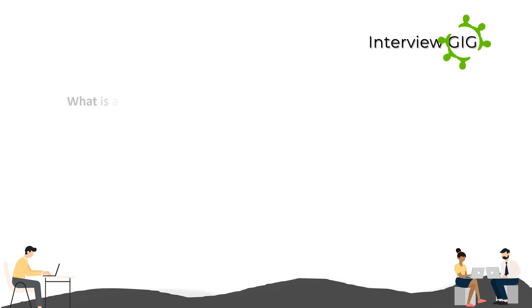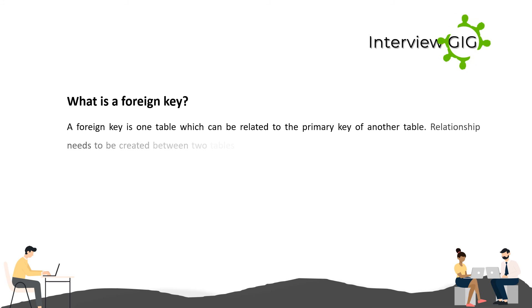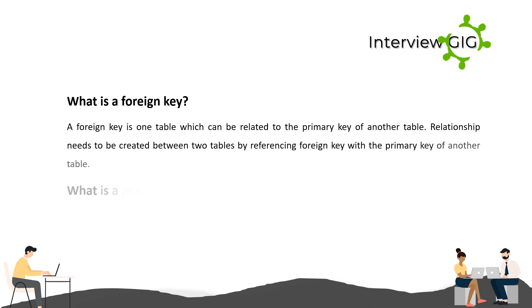What is a foreign key? A foreign key in one table can be related to the primary key of another table. A relationship is created between two tables by referencing the foreign key with the primary key of another table.